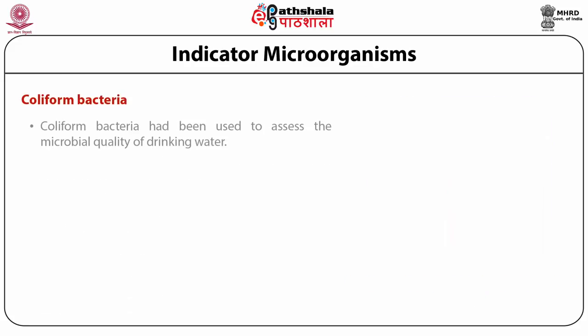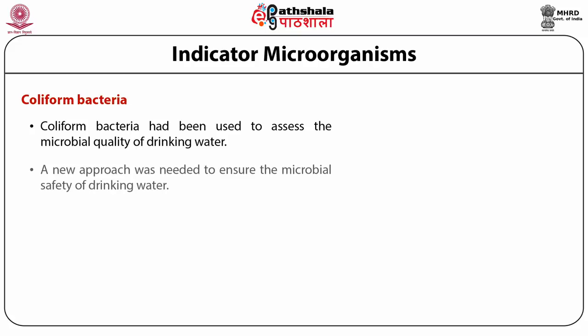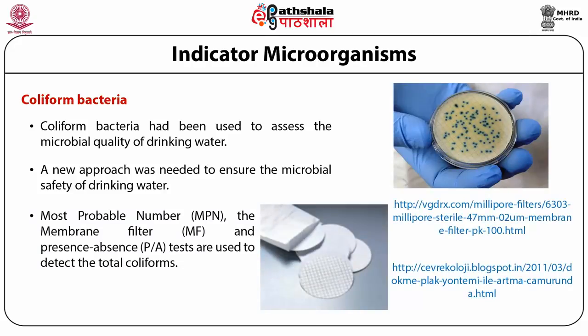Coliform bacteria have been used to assess the microbial quality of drinking water. A new approach was needed to ensure the microbial safety of drinking water. The Most Probable Number (MPN), the membrane filter (MF), and the presence-absence (P/A) test are used to detect the total coliform present in the water.